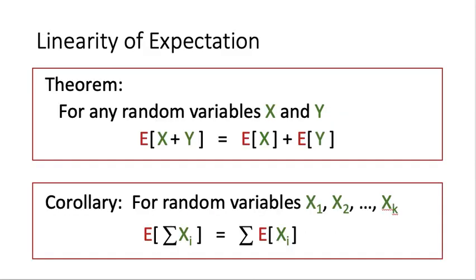Now we talk about a very important result called linearity of expectation. For any random variables x and y, the expected value of x plus y is equal to the expected value of x plus the expected value of y. From this, we can make a corollary: for random variables x1, x2, up to xk, the expected value of the summation of xi equals the summation of the expected values of individual xi. In short, expected of a sum equals the sum of expectations.